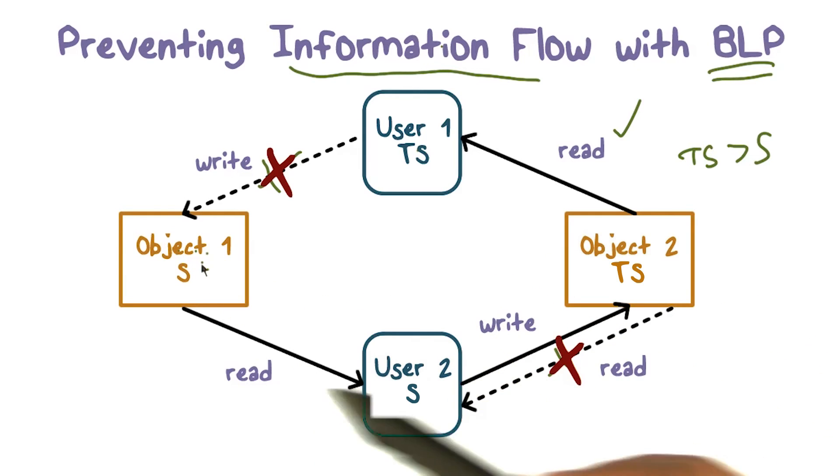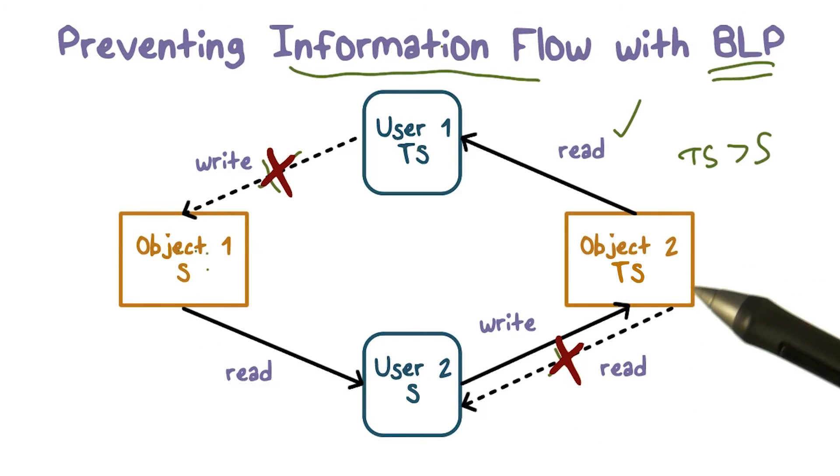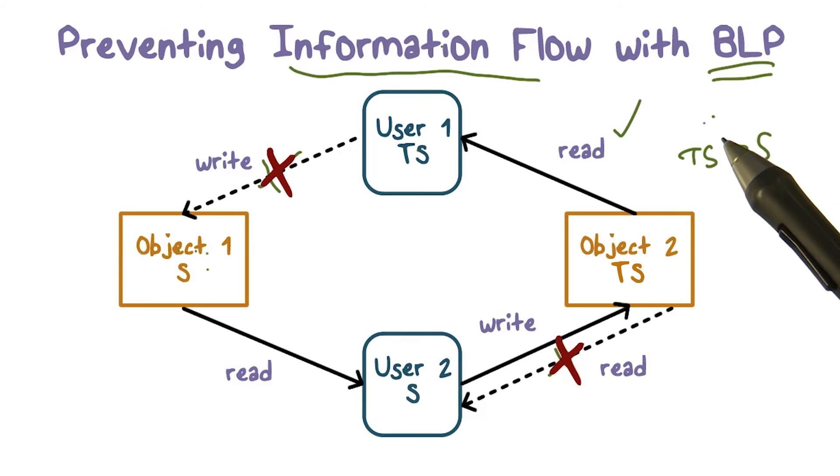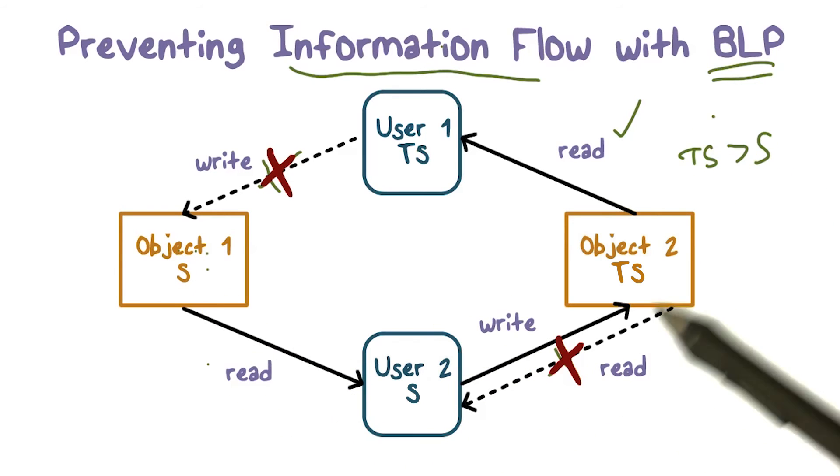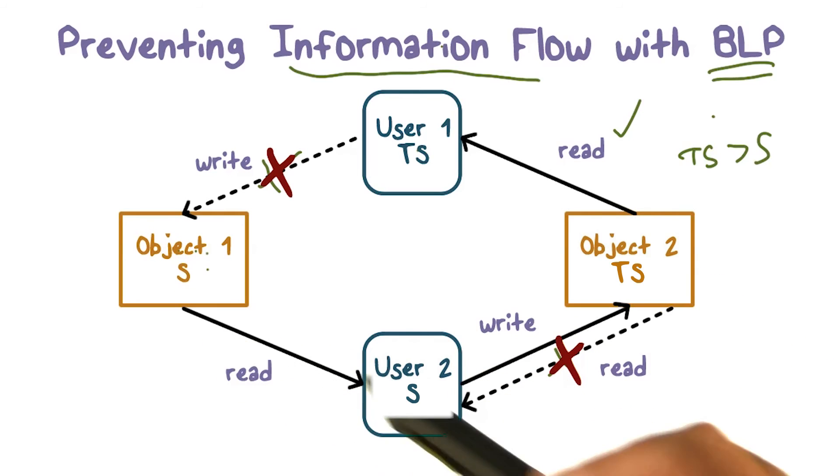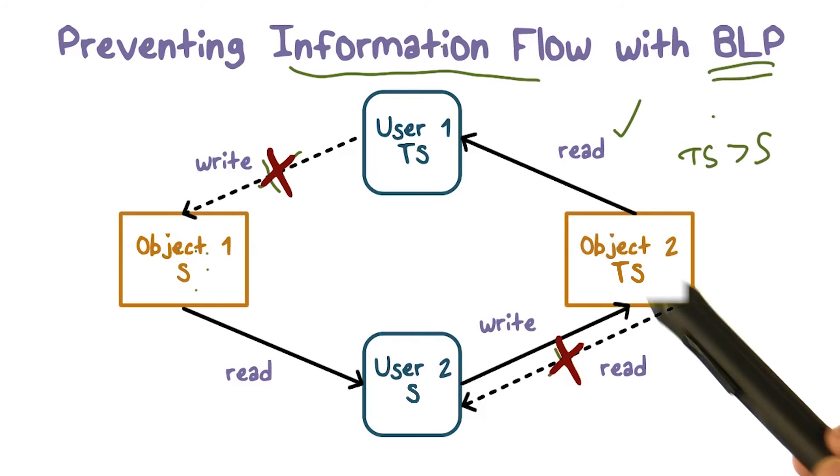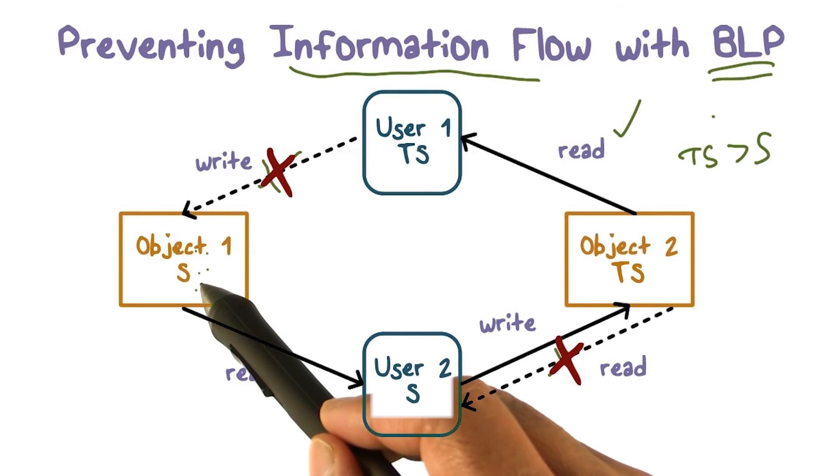Can information from object one flow into object two? Secret can read this object and can write up yes. But that doesn't violate any confidential requirement, isn't it? So secret information can now be read by a top secret person because this information made its way from here through user two into this object. A top secret user could already read this, isn't it, read down.